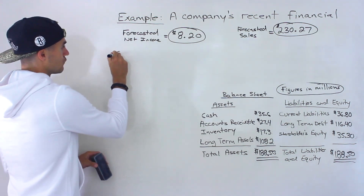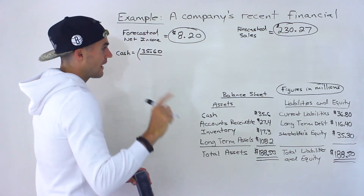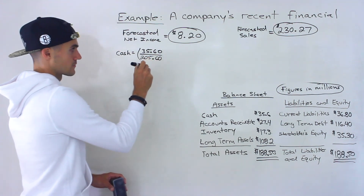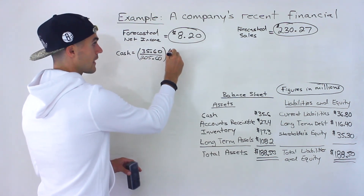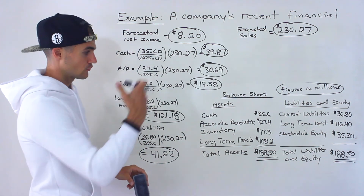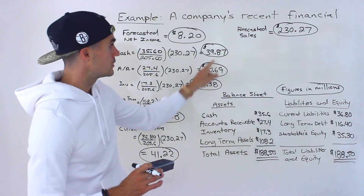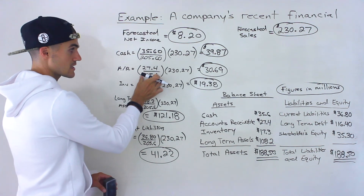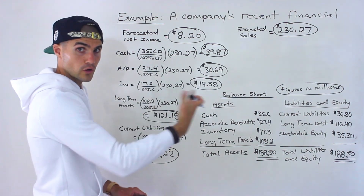You could also just multiply each current item by 1.12 to grow it at 12% and get the same value. I did this for all other balance sheet items: accounts receivable, inventory, long-term assets, and current liabilities. All the circled amounts are the forecasted balance sheet items. I then put them into the actual balance sheet — the entire left side has changed — and totaled the assets. Current liabilities of $41.22 go on the right side, and long-term debt stays constant.